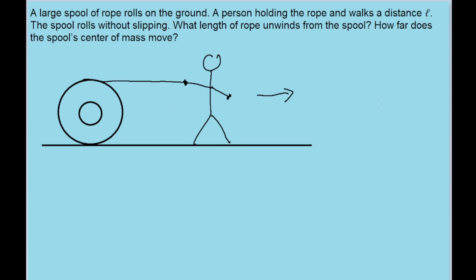We have an interesting problem where we have a spool of rope on the ground and a person who's grabbed onto an end of the rope and is walking to the right a distance of L. We want to find how much the rope unspools — what length of rope comes out of the spool — and also how far the spool's center of mass moves.